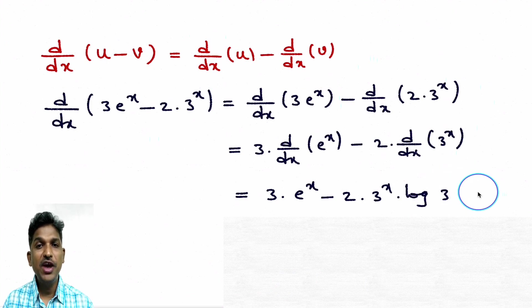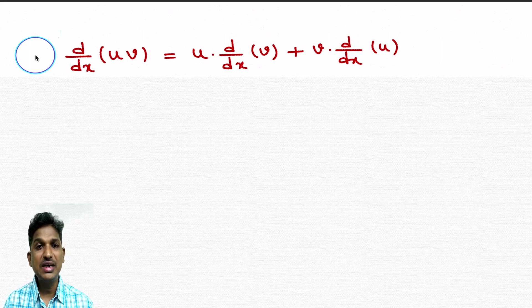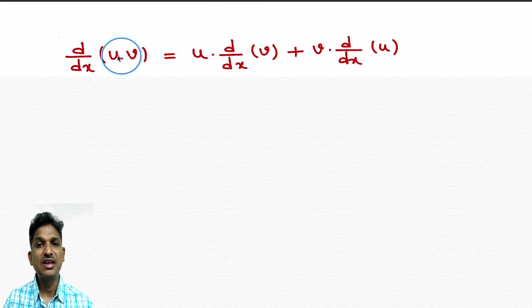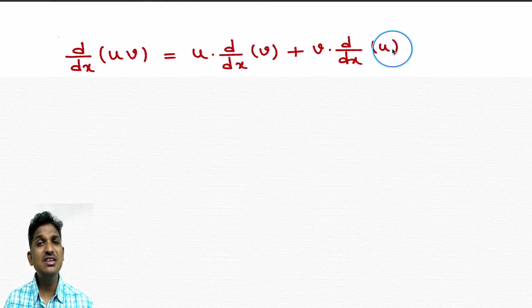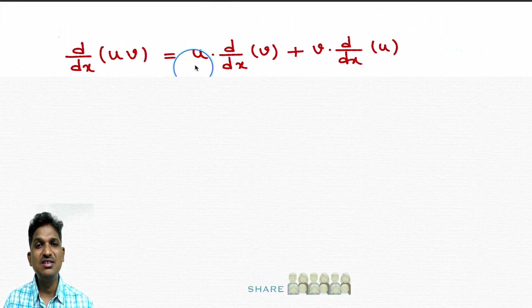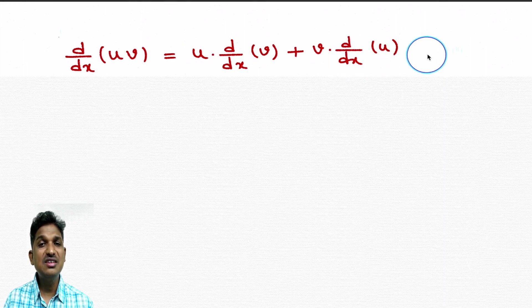Now we will learn the product rule — one of the most important formulas. d/dx of uv, where u and v are two functions. The formula is: derivative of uv equals u into derivative of v plus v into derivative of u. Keep in mind: when dx is in the denominator, we are differentiating with respect to x; when dy is there, it is differentiation with respect to y.